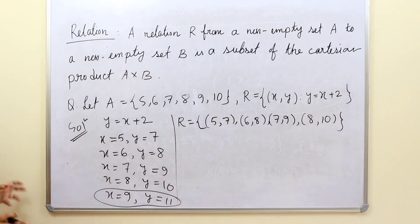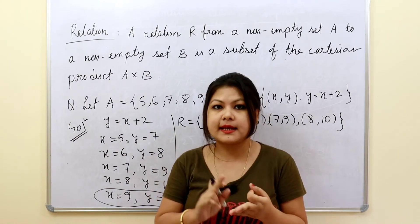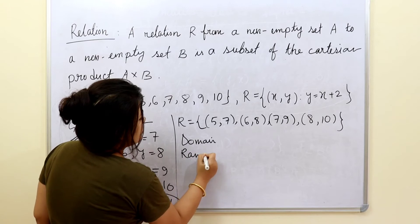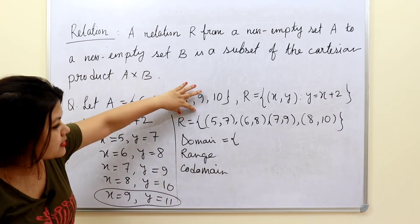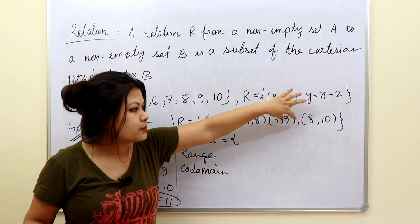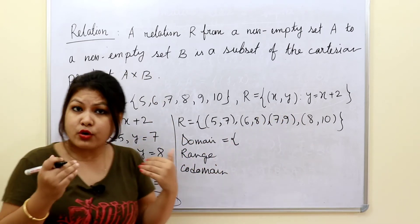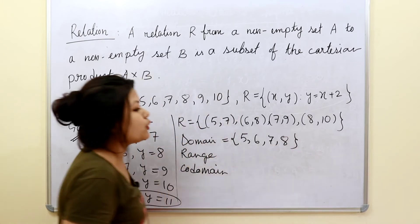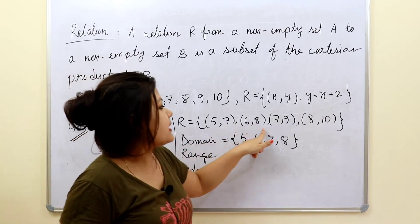Whenever we talk about relations, 3 concepts must be clear: Domain, Range, and Co-domain. So what is domain? From the ordered pairs in the relation, the set of all first elements is called the domain. In this case, the domain values are {5, 6, 7, 8}. Range is the set of all second elements in the ordered pairs of the relation, so range = {7, 8, 9, 10}.